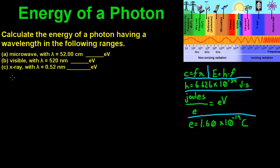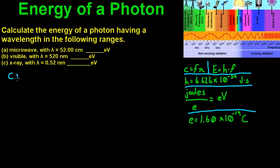We know that c equals frequency times the wavelength. So we need to rewrite this for frequency. Frequency is just going to equal c, the speed of light, divided by the wavelength.